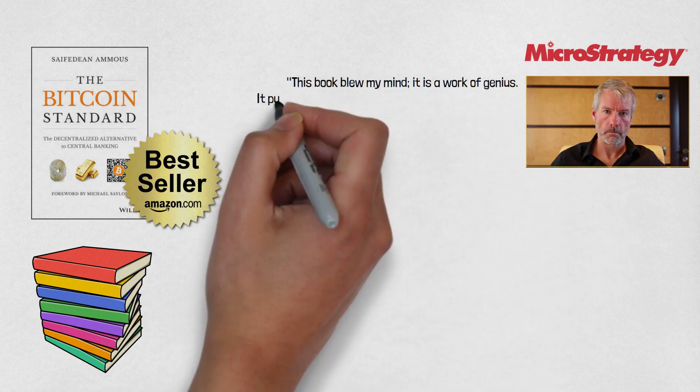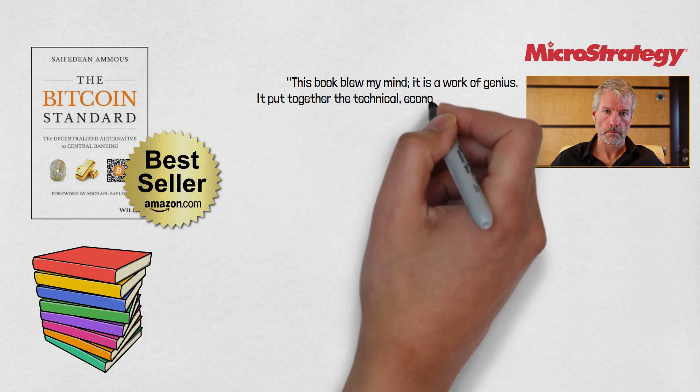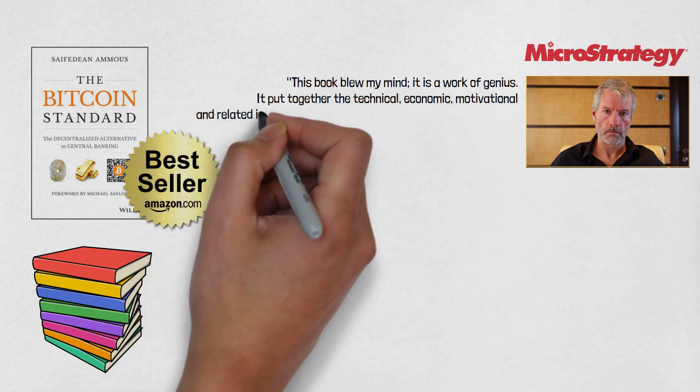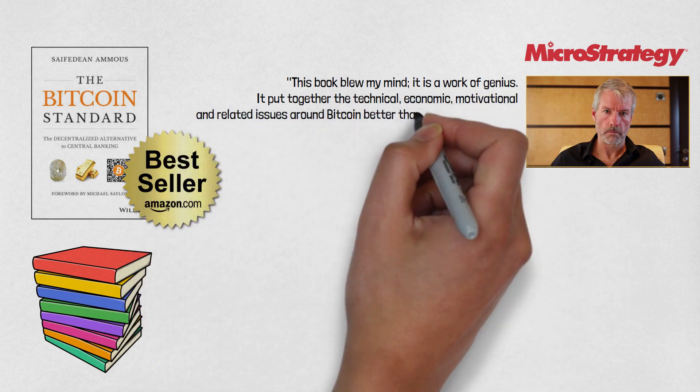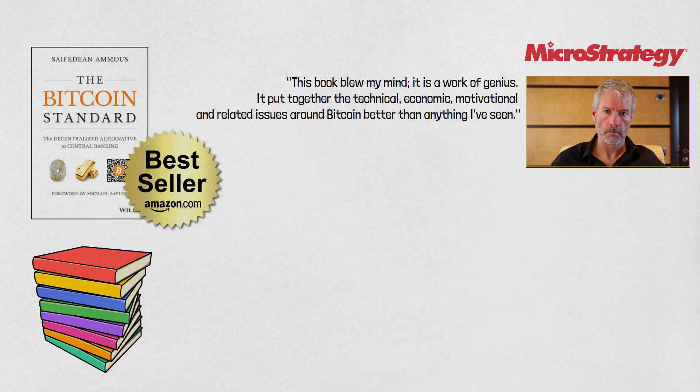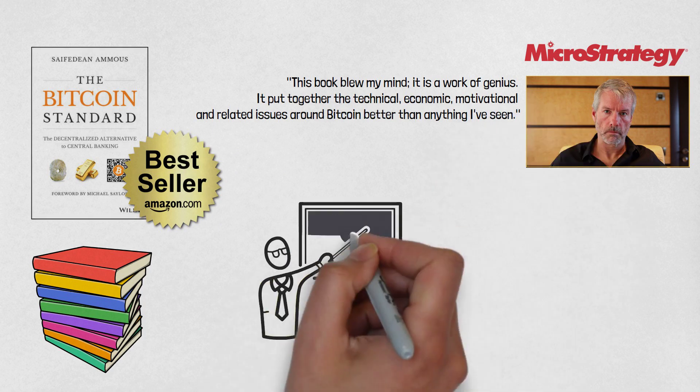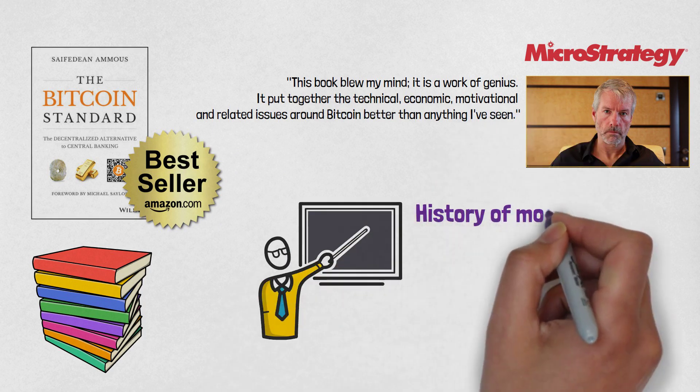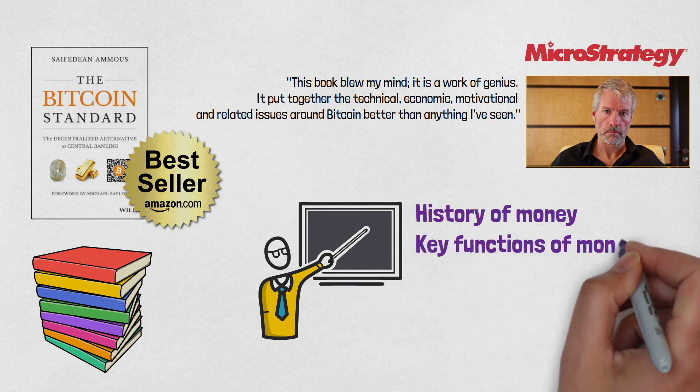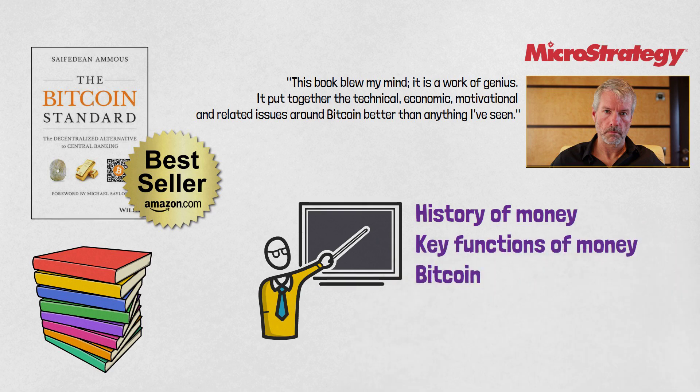It is a work of genius. It put together the technical, economic, motivational, and related issues around Bitcoin better than anything I've ever seen. The Bitcoin Standard book explains history of money, key functions of money in our society, and examines the role of Bitcoin in solving our money problem.